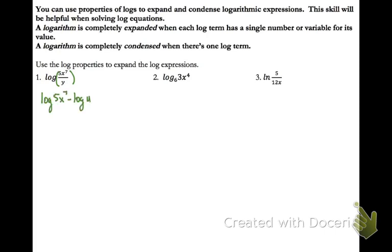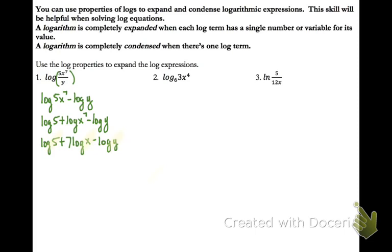The base is 10, so we don't write the subscripted 10. We write log of the numerator, 5x to the 7th, minus log of the denominator. Now we look at the first expression: the value is 5 times x to the 7th power. We have powering affecting only the x, and multiplication affecting both terms. So we rewrite that as a sum: log 5 plus log x to the 7th. Then we take the power 7 and rewrite it as multiplication, giving log 5 plus 7 times log x minus log y. The log values are now all single numbers or variables, so it is completely expanded.